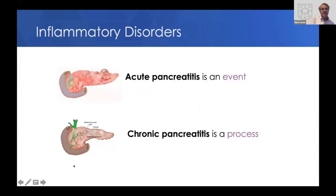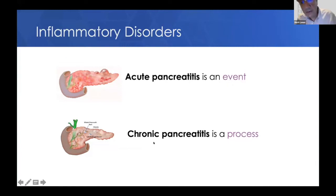I'd like to spend the rest of my time talking about the inflammatory disorders, which are more common. Acute pancreatitis is an inflammatory disorder of the pancreas that, in most patients, occurs one time — I like to think of it as an event. Whereas chronic pancreatitis is a process that develops over time. What I'd like to do is highlight some of the things that are different about these disorders in children.